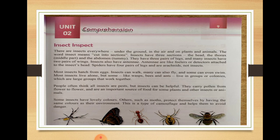The word 'insect' means 'cut into sections,' meaning divided into parts. Insects have 3 sections, so the body of the insect is divided into 3 parts: the head, the thorax (the middle part), and the abdomen (the tummy).